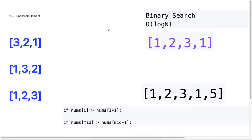Now we're going to look at how binary search can be used to optimize this problem and get our time complexity to O(log n) from O(n), which is what our linear scan used in the previous solution. I've taken the same examples first just to keep things simple, and we're going to do a modified version of binary search. If you haven't done binary search before, I recommend doing a normal binary search first, because it will make sense after you do the regular way — then you can see how to use it to solve this problem.